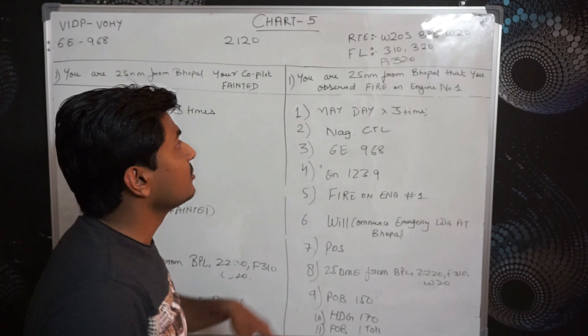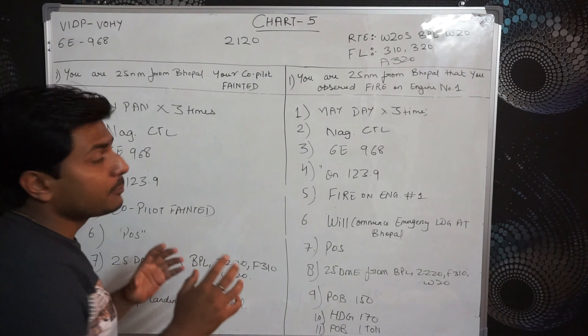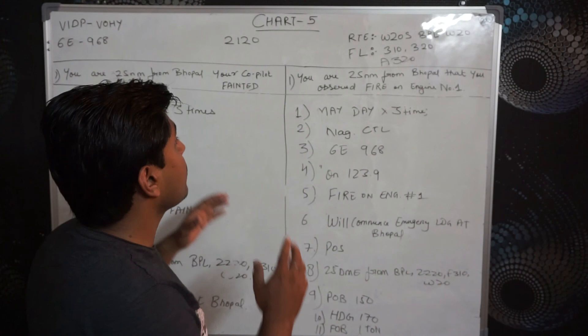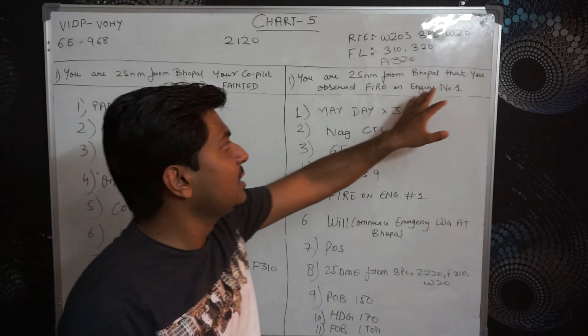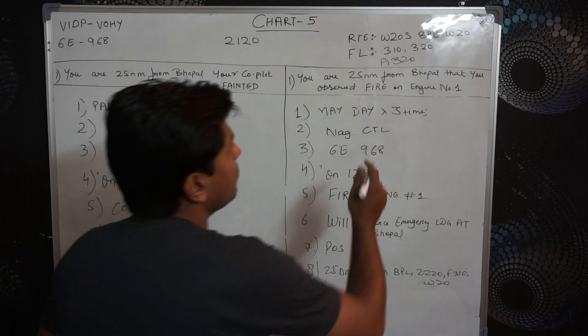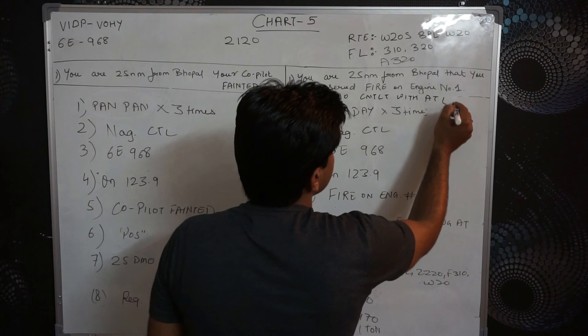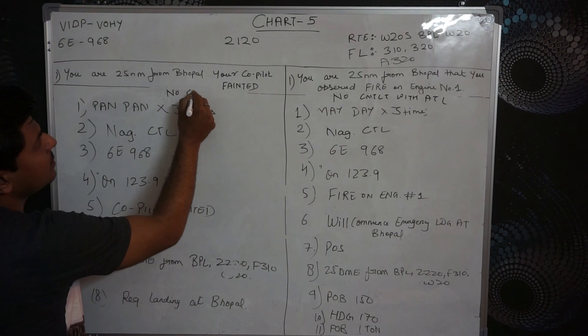In one case, you observed a fire on engine number 1 — that's the Mayday condition. In the other case, your co-pilot fainted — that's the Pan Pan condition. These conditions are originally from the normal contact with ATC example. But now I'll add one line to each: no contact with ATC. I'll convert these normal transmissions into broadcasts where there is no contact with ATC.